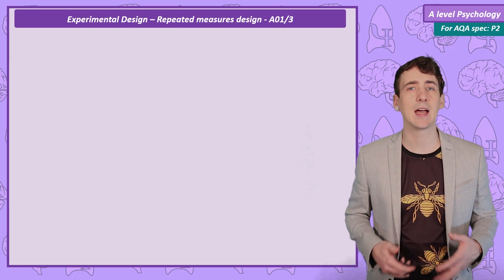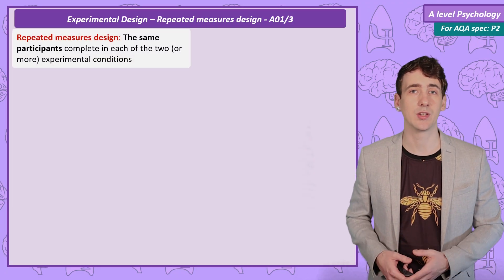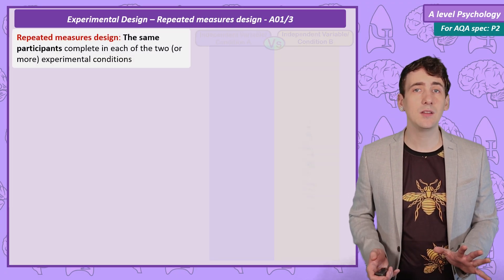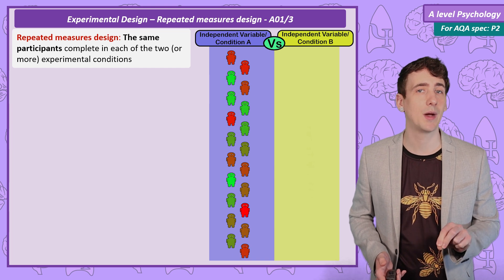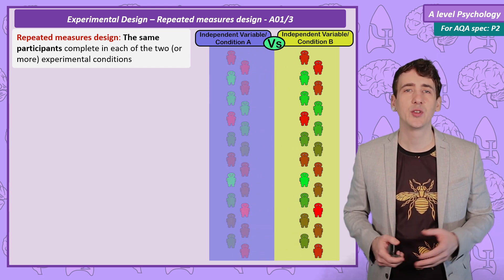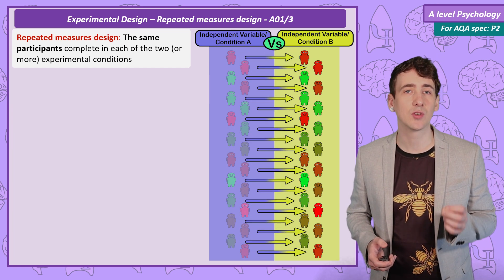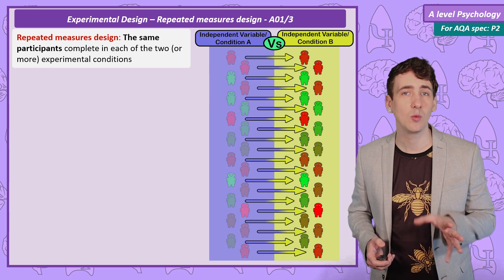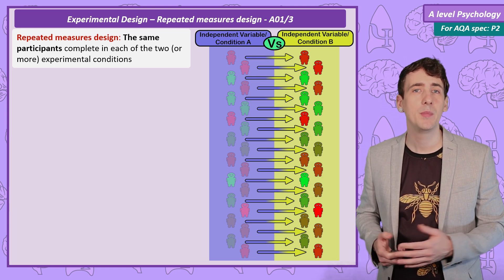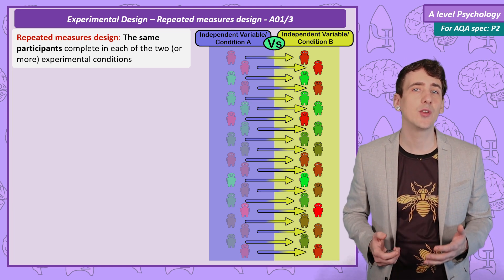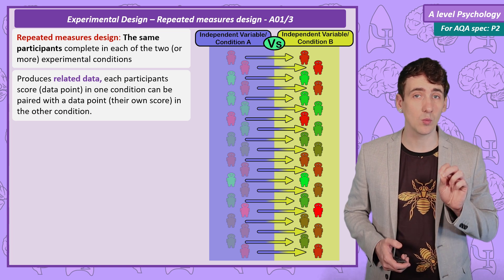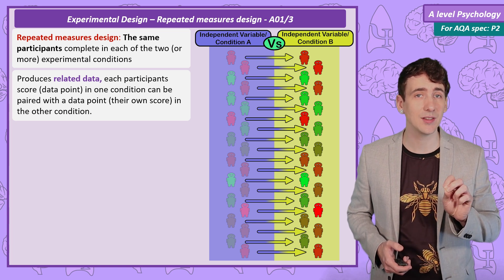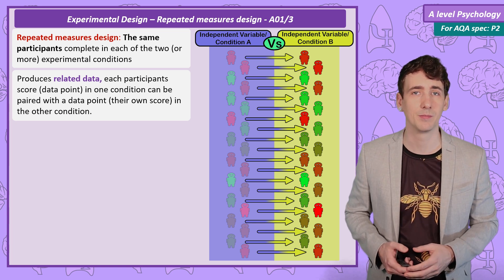Repeated measures design. An alternative is to get all the participants to complete both conditions. It's easy to remember its name as each participant has to repeat the experiment under each condition. The researcher is comparing each participant's score in condition A with their score in condition B. Because of this, the data the researcher has collected is called related data.